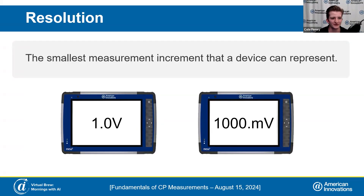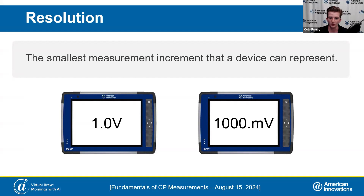Resolution is basically the smallest measurement that you can take on any measurement device — the smallest one it can represent. I've got two Mesa tablets on the screen, or if you use an Allegro field computer you'll see the same type of screen. These two devices are capturing the same measurement, but the resolution is smaller on the one on the right, so you can capture a more granular measurement. You have one volt on the left and 1,000 millivolts on the right — the same measurement. You want to make sure your DVM is set to the right resolution for what you're capturing.